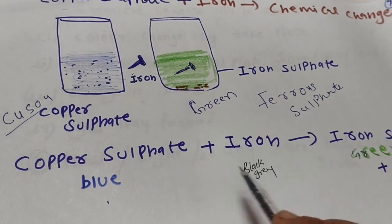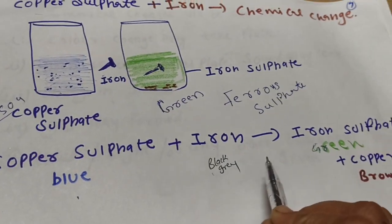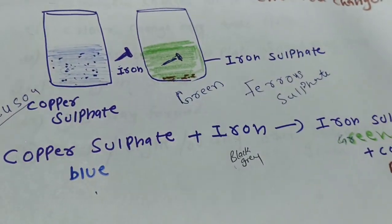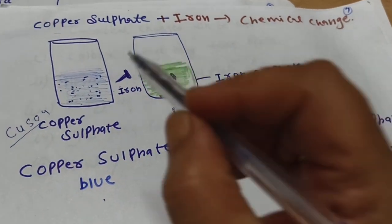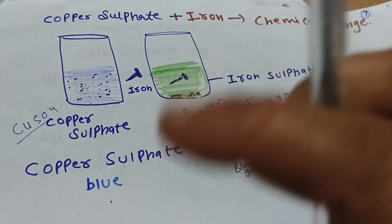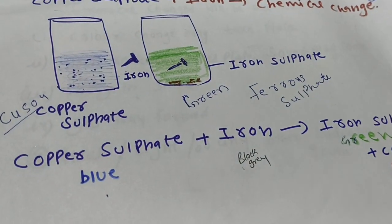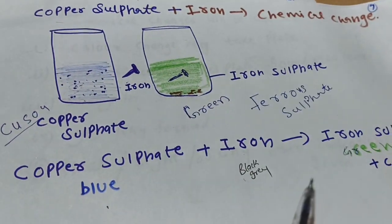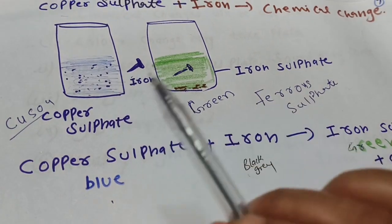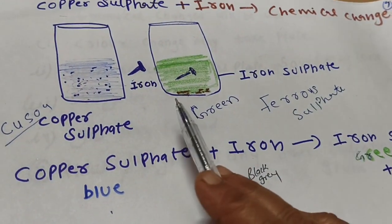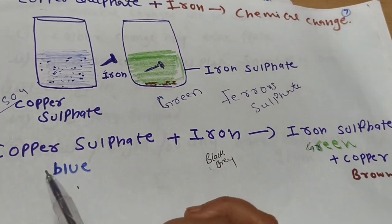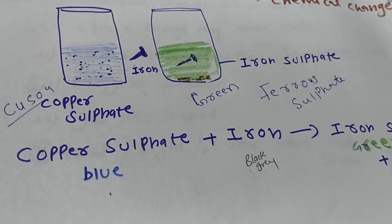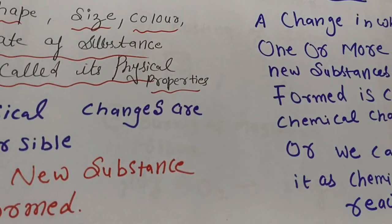Copper sulfate reacts with iron to give iron sulfate plus copper. Some brown copper dust will be deposited. Copper sulfate is a blue powder in the lab. When we make this solution and add an iron piece, the iron gives you iron sulfate plus copper.